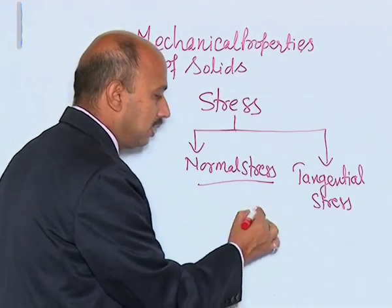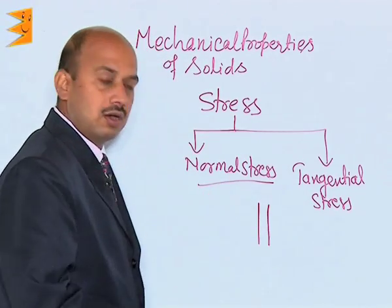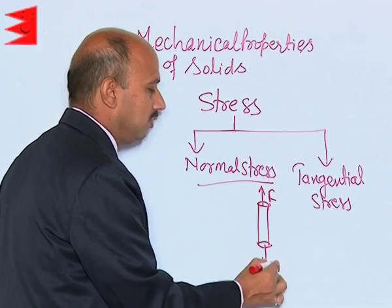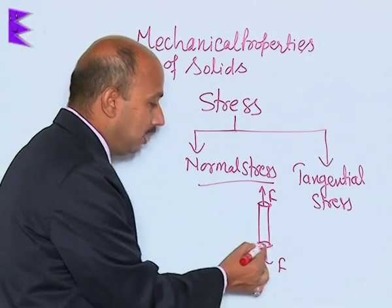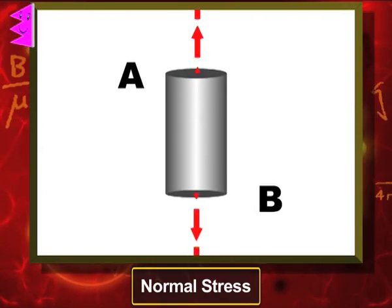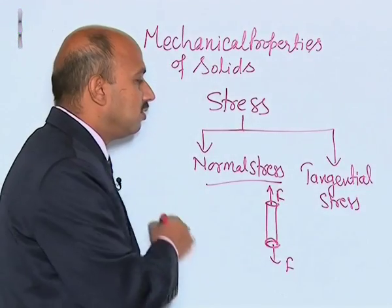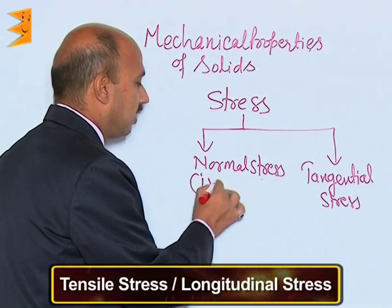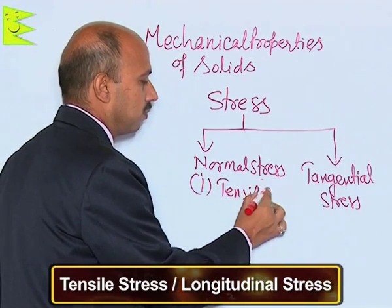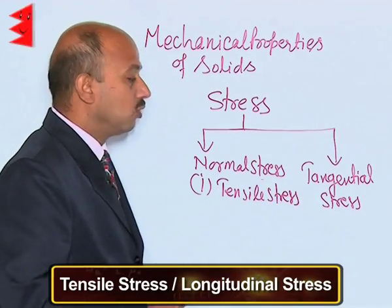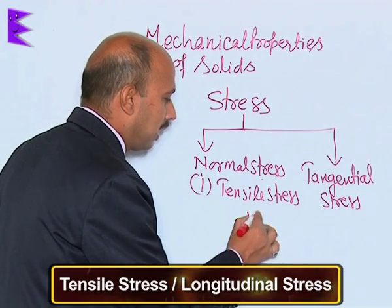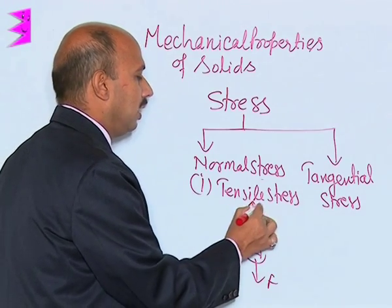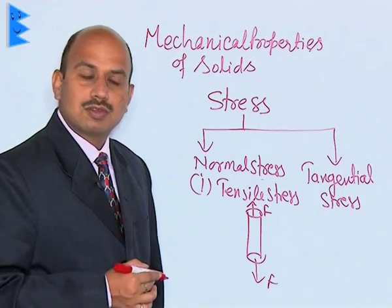Suppose you have a cross-section of a wire and you apply force perpendicular to that area of cross-section — that force per unit area is known as normal stress. Normal stress is further categorized into two parts. The first is tensile stress, also known as longitudinal stress. If you apply force such that there is an increase in the length, that is known as tensile stress.